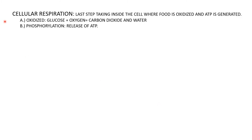The last step is cellular respiration, which takes place inside the cell where food is oxidized and ATP is generated. There are two steps: oxidation, in which glucose gets oxidized to form carbon dioxide and water, and second is phosphorylation, which is the release of ATP.